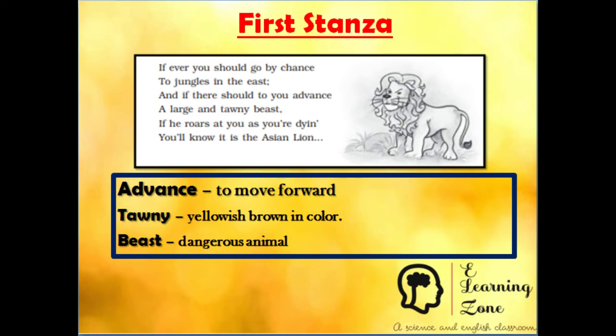You will see lions that are very majestic and mighty wild animals. The lion has a yellowish-brown skin and its roar is very loud and scary — so much that it could even terrify you to death. You understand it is the Asian Lion because it can kill anyone by its roar. If you meet such a grand and majestic wild animal, be sure it is an Asian Lion.